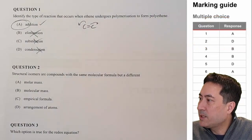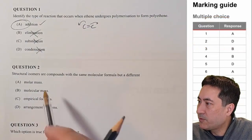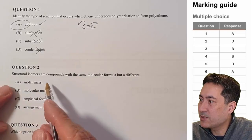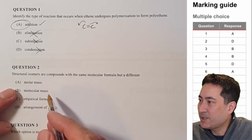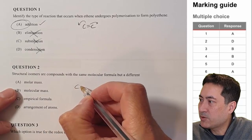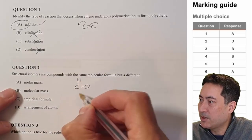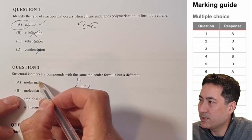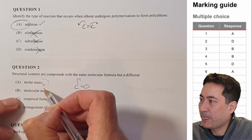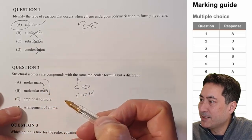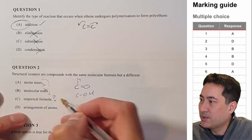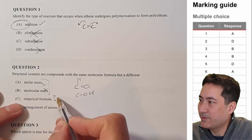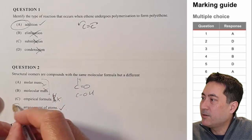Question two: structural isomers are compounds with the same molecular formula but a different arrangement. I hate it that they use different types of terms for structural isomers. In this one it doesn't really matter that they use the word 'structural,' because molar mass and molecular mass must be the same in every single isomer — including empirical formulas. So that was just a safety one.